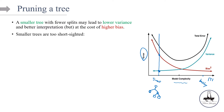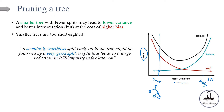Smaller trees are also too short-sighted. Quoting from the ISLR textbook: a seemingly worthless split early on in the tree might be followed by a very good split down the road — a split that leads to a large reduction in RSS or impurity index later on. But if we stick to a smaller tree, that split is not going to show up. So that seemingly worthless split won't be picked at the top root, and for that reason the following very good split will also be missed.